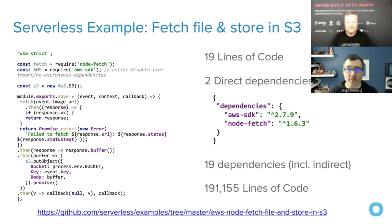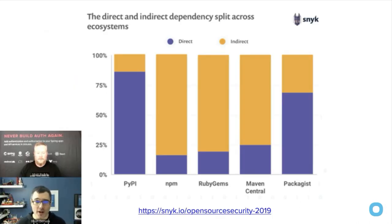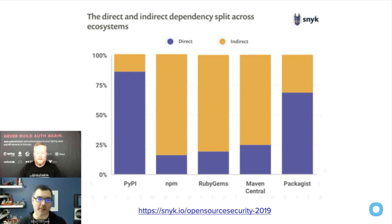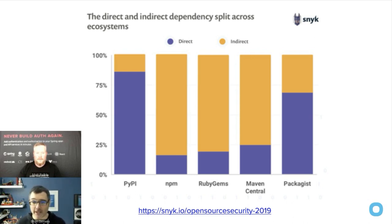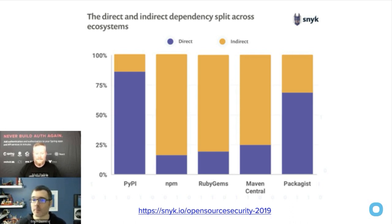In the Java, Node, and Ruby communities, most of our dependencies are indirect or transitive. It becomes harder to manage them because we generally just think about our favorite library and don't consider transitive dependencies — which could have issues. Because it's complicated, you need a tool to manage this. Our friends at Snyk have a great application you can use to scan your dependencies.